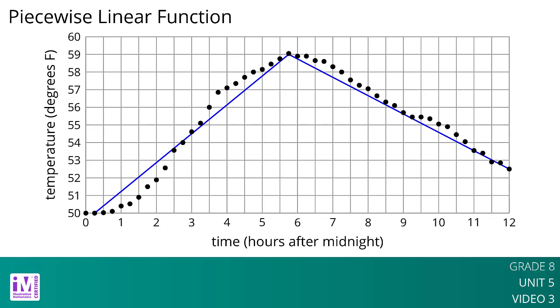Here is a graph of temperature recordings taken at several times throughout a day and modeled with a piecewise function made up of two line segments. A piecewise linear function can be used to model situations in which a quantity changes at a constant rate for a while, then switches to a different constant rate. We can use piecewise functions to represent stories, or we can use them to model actual data, like we see here.